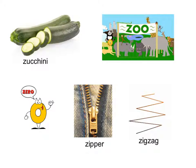What picture do you see that starts with the 'z' sound? Zipper. Zipper starts with 'z'. What do you see? Zero. Zero starts with 'z'.